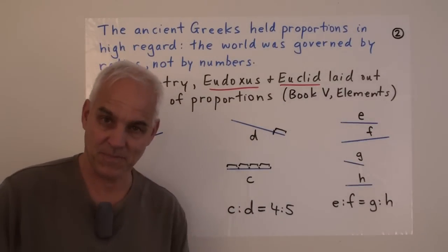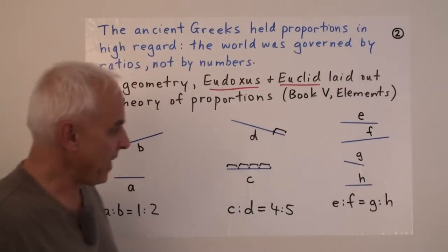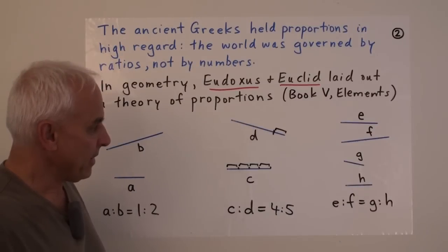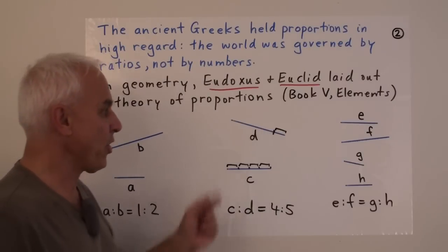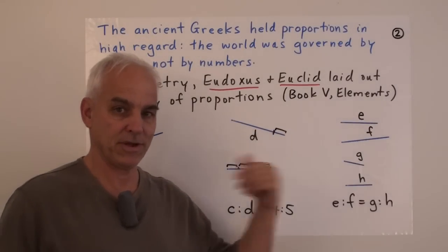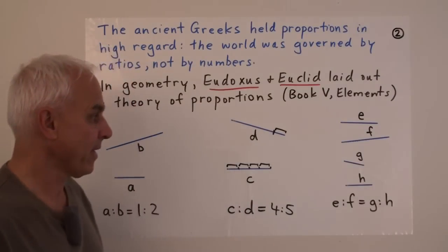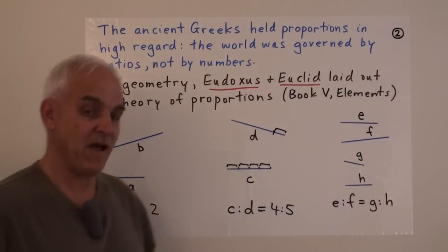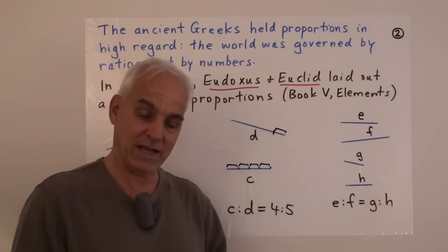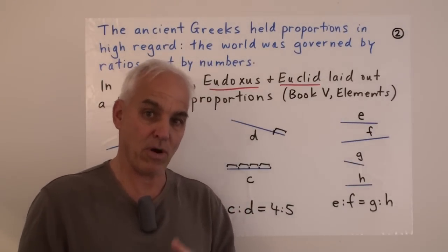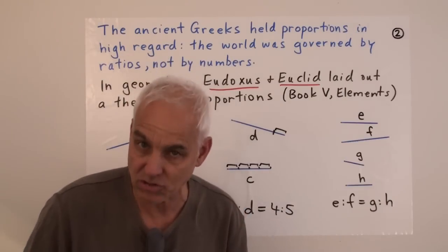This is a very attractive theory, but the Greeks eventually realized they had to go further — it was necessary sometimes to compare segments which were not commensurable. For example, the side and the diagonal of a square. And Eudoxus in particular developed a more sophisticated approach to proportions, which allowed one to work with more general lengths, even if they form an incommensurable pair.